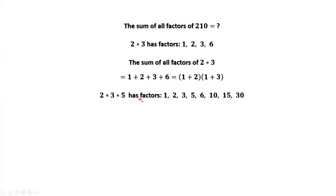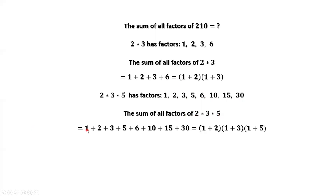30 has factors 1, 2, 3, 5, 6, 10, 15, 30. The sum of all factors of 30 equals 1 plus 2 plus 3 plus 5 plus 6 plus 10 plus 15 plus 30, which is (1 plus 2) times (1 plus 3) times (1 plus 5).